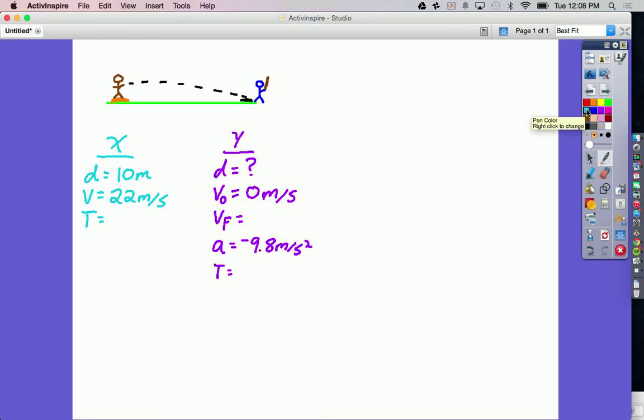So in the x direction, we only have one equation because we have constant velocity in the x, and that's distance equals velocity multiplied by time. We're looking for time, so rearranging that equation, I get time equals distance over velocity.